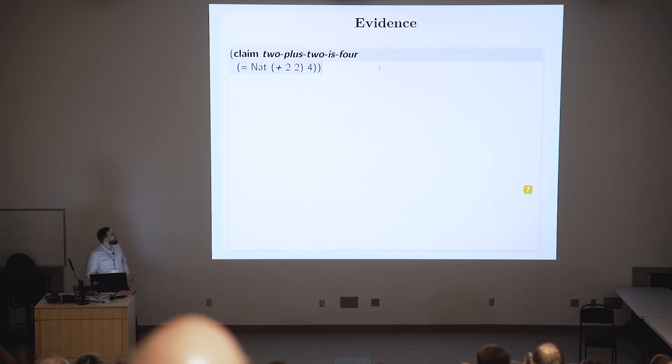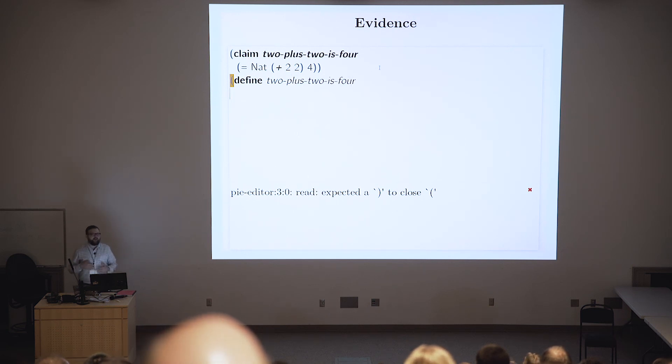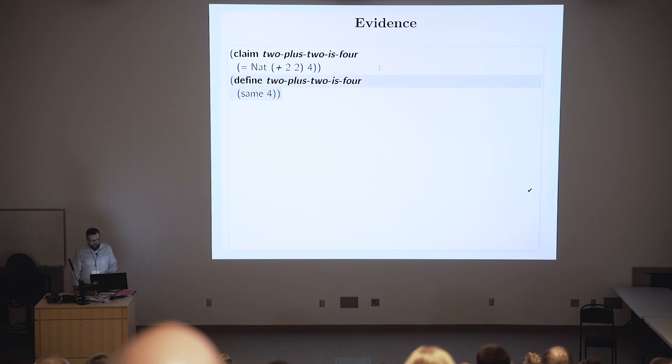And so the first thing that I'm going to show you how to do is to prove that 2 plus 2 equals 4. And when I say prove, what I mean is actually give evidence. So what is the evidence that 2 plus 2 and 4 are the same thing? They're the same. So the evidence is that they are the same. So I can say define 2-plus-2-is-4. I used a long name so that I wouldn't go too fast and leave anyone behind. And that evidence is same 4 because they are the same thing, and it's 4. And we get a nice little green checkmark sort of down here in the corner saying, yep, everything's A-OK.